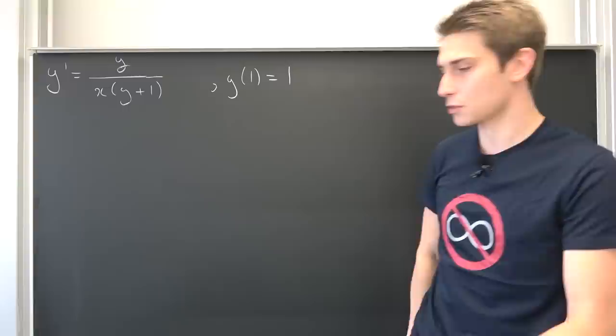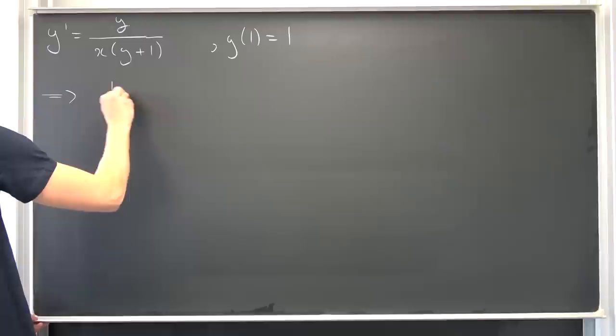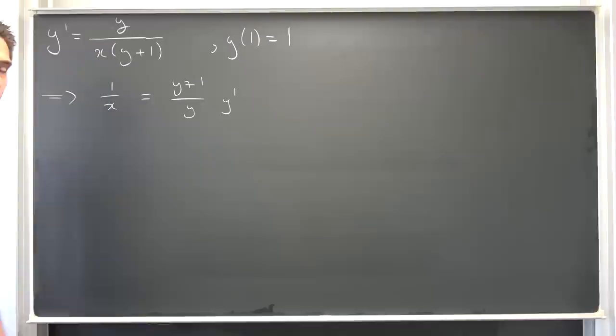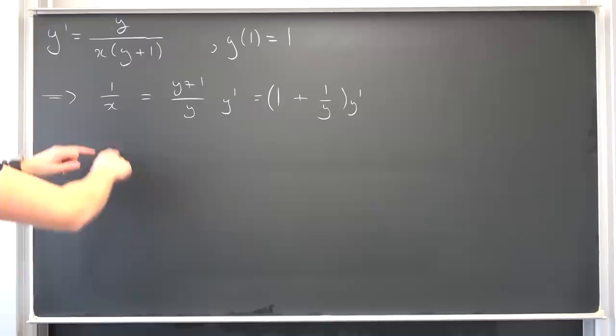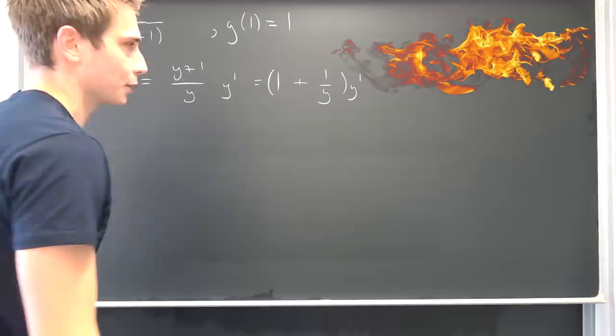Now, this means that 1 over x is thus nothing other than y plus 1 over y times y prime. Also, I want you guys to notice we can break this up into y over y, meaning 1, plus 1 over y times y prime. And now we can go ahead and integrate both sides. This side with respect to x and this side with respect to y respectively. It's just how differential equation solving works.